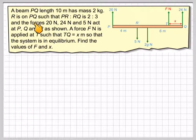A beam PQ of length 10 metres has a mass of 2 kilograms. R is on PQ such that PR to RQ is 2 to 3. We're going to assume that this is a uniform mass as well. It's 2 to 3.